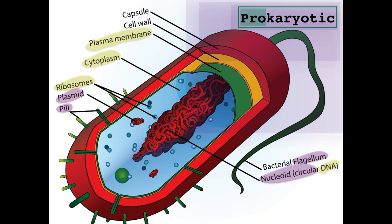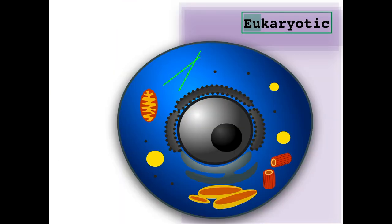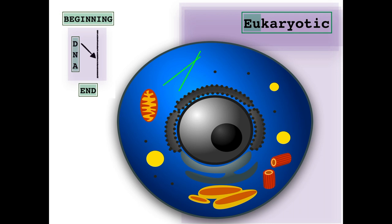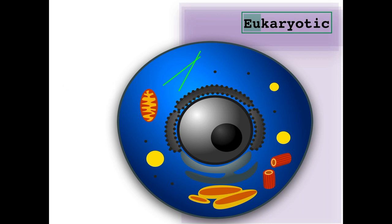As an additional layer of protection from the outer environment, some prokaryotes have a capsule. It is worth noting that some eukaryotic cells, such as plant cells, also have a cell wall. The main distinguishing feature of a eukaryotic cell is that the DNA is linear and separated from the cytoplasm with a membrane, thus creating the organelle called the nucleus.